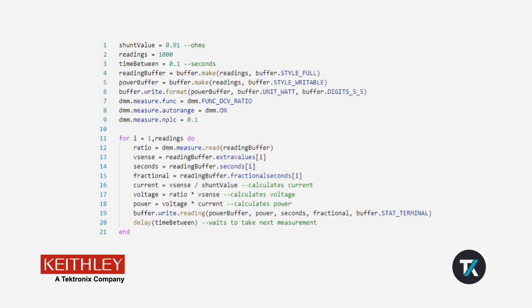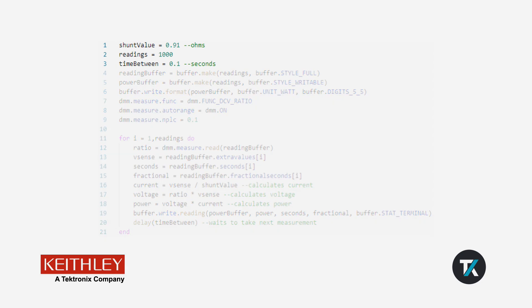Now, let's dig deeper into what this simple script is doing. First, we initialize a few variables. We set the shunt value to our specific shunt resistance, in this case 0.91 ohms. Set our number of readings to 1000 and the time between each reading to 0.1 seconds.